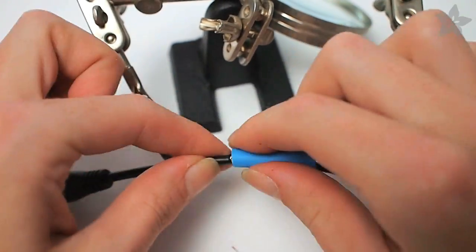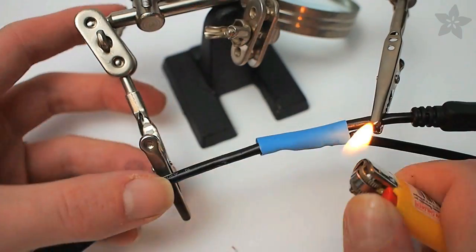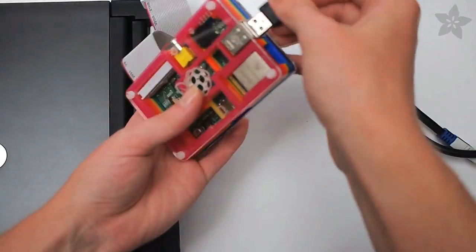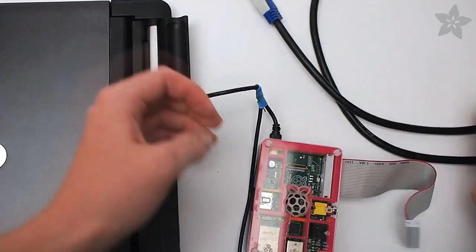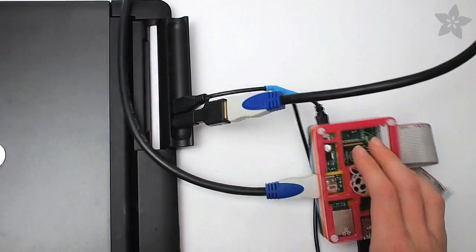Lastly, slide your giant piece of heat shrink tubing over the whole big mess. Then just connect your Frankenstein cable to the laptop dock and your HDMI adapter chain, and press the any key to get started.